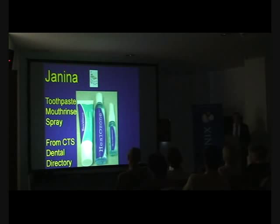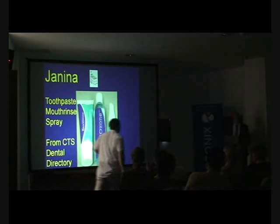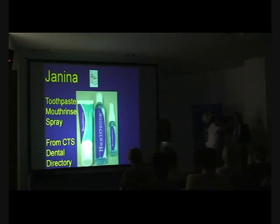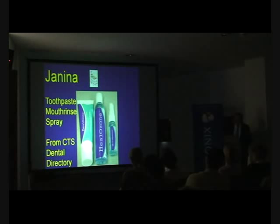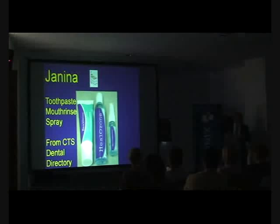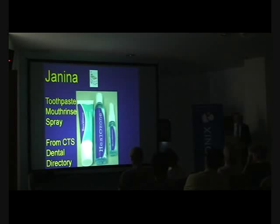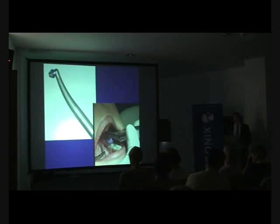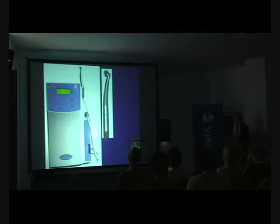The usual preventive strategies include using products particularly helpful with remineralisation, one of which is GC Tooth Mousse with casein phosphopeptide and amorphous calcium phosphate. Another is the product Curazone produces called Hedazone, which is a supersaturated solution of calcium phosphate, zinc, fluoride, and xylitol. Another excellent one is from a UK company called Janina, which also has supersaturated calcium and phosphate, zinc, xylitol, and fluoride, but additionally contains nine other ingredients including two different peroxides. All patients will get not just ozone but a full preventive philosophy to carry this through.